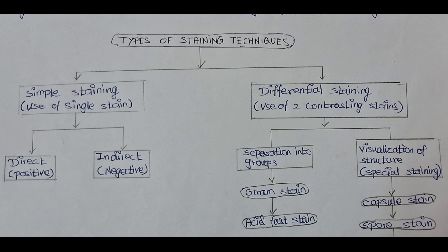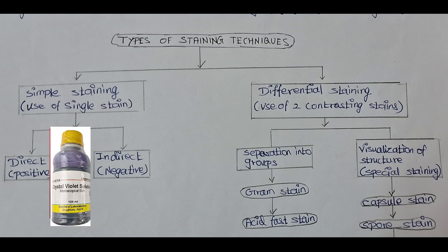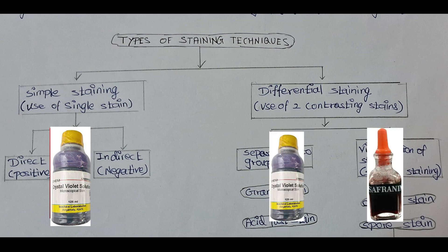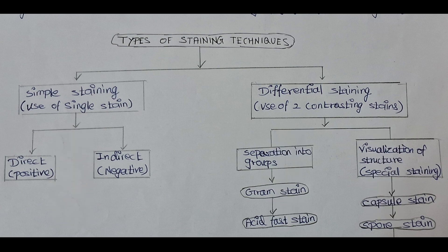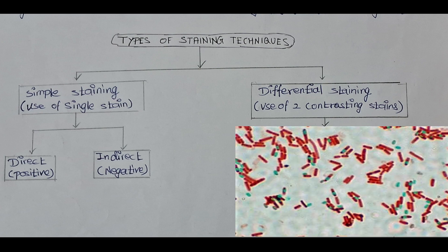Simple staining example: crystal violet or methylene blue — if you use any single stain. Differential staining example: crystal violet and safranine — two stains used together. Differential staining can also be used for specific purposes, for example, spore staining, where spores and bacteria show different colors.